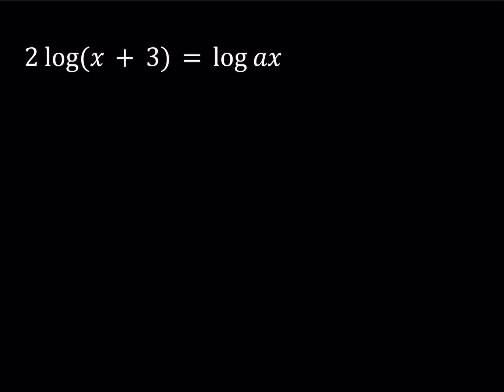Hello everyone. In this video we're going to be looking at a logarithmic equation. This problem was taken from a book called A Problem Book in Algebra by Kretschmar. I'll share the link down below. So we have 2 times the log of x plus 3 equals log of ax, and we know that this equation has only one root. We're going to be looking for the a values.